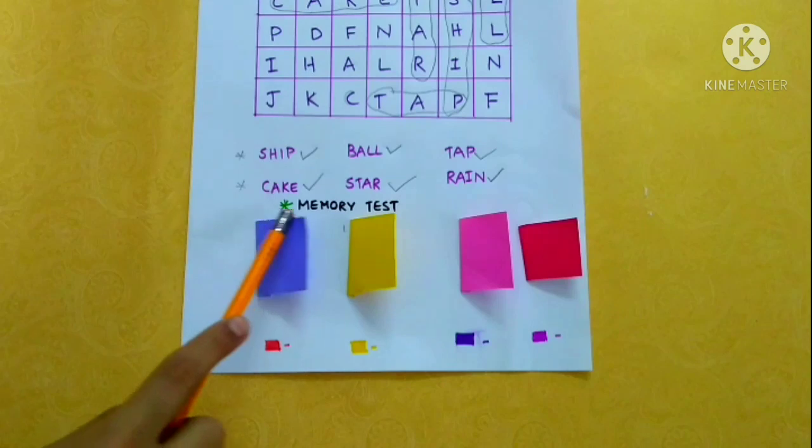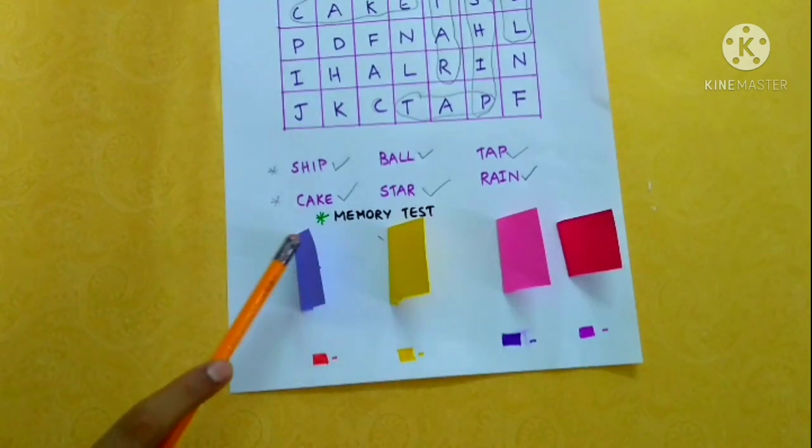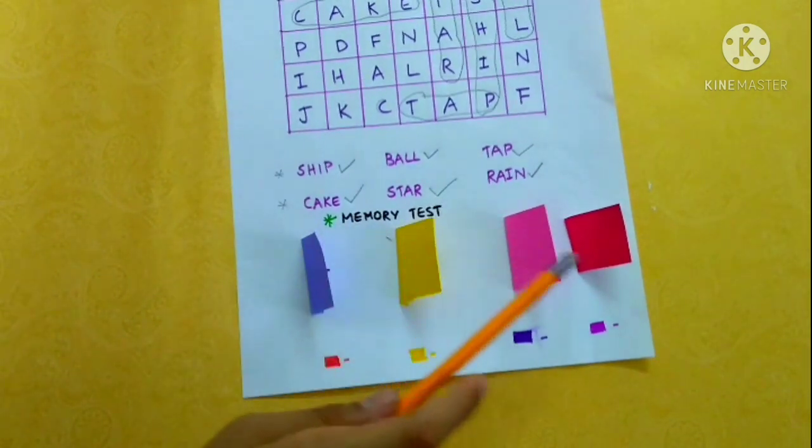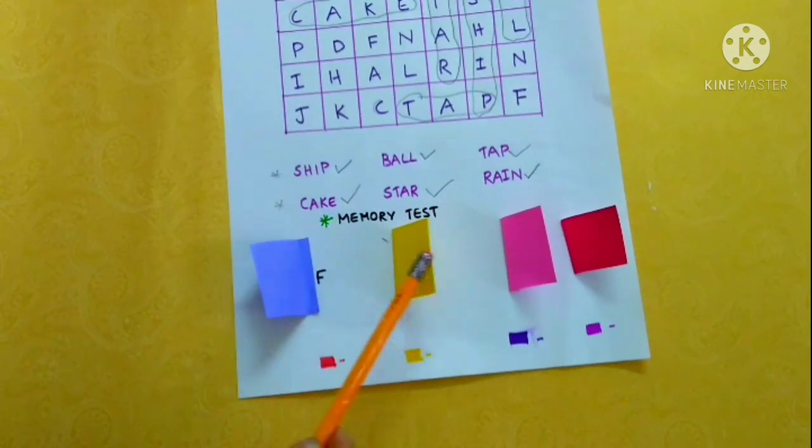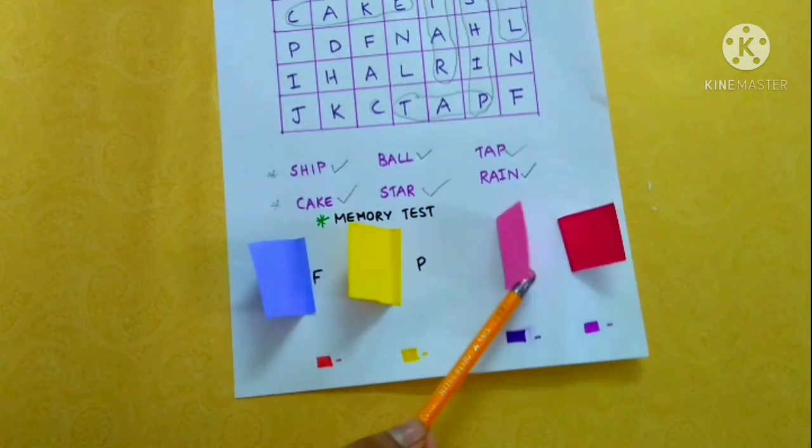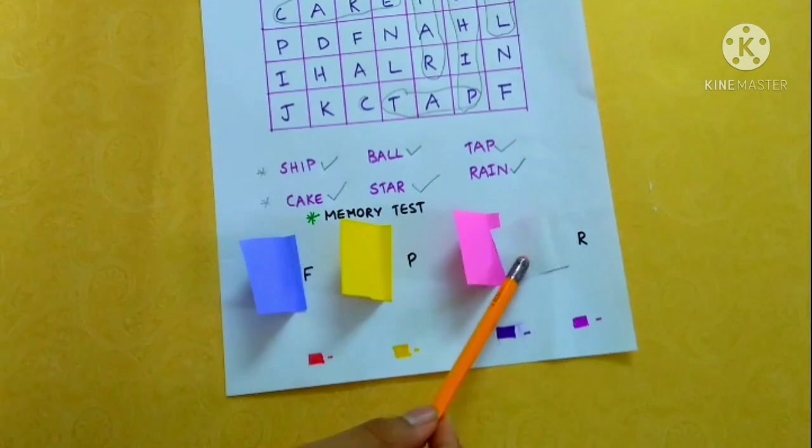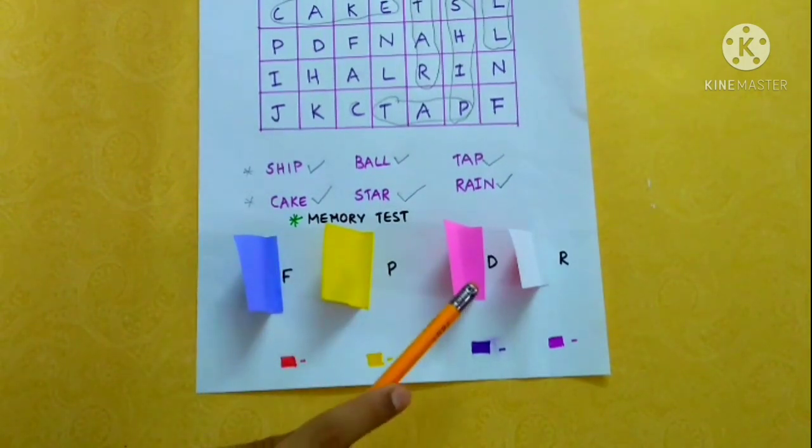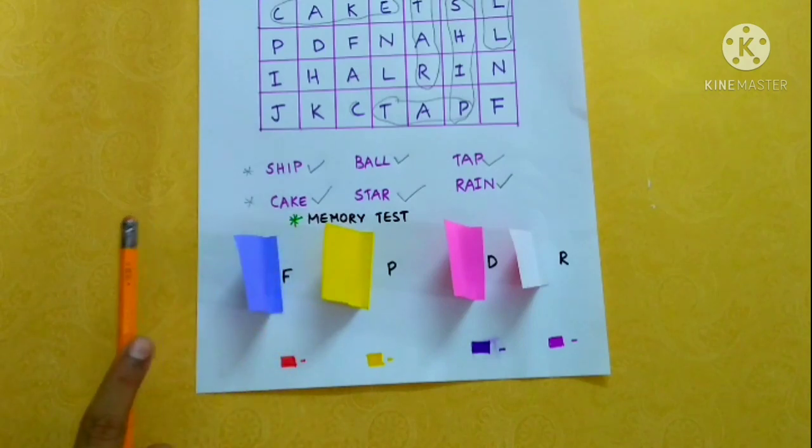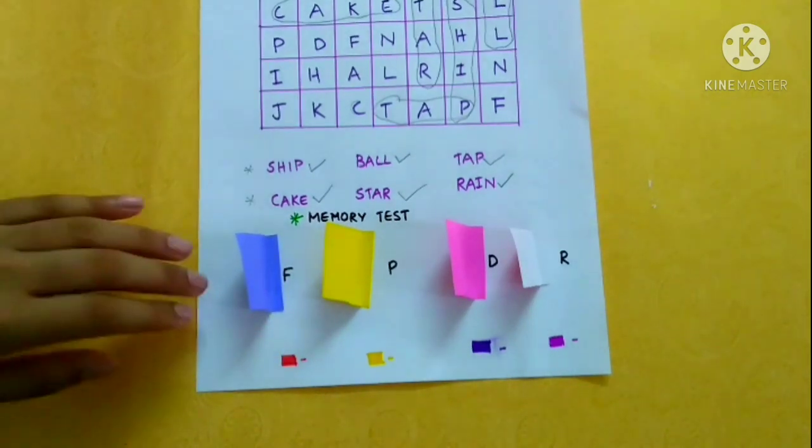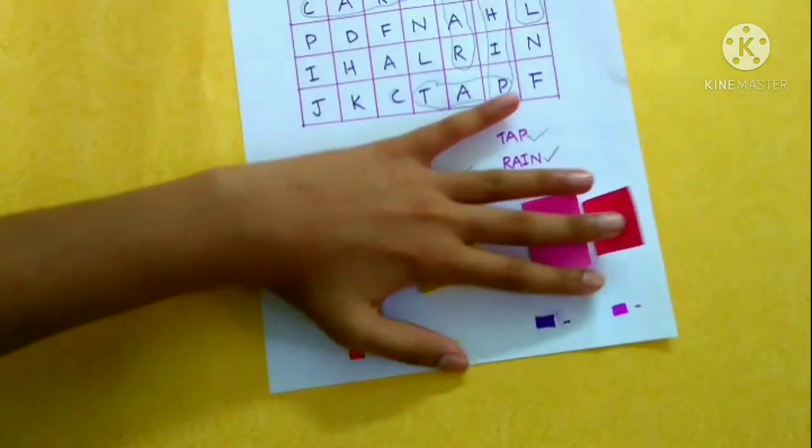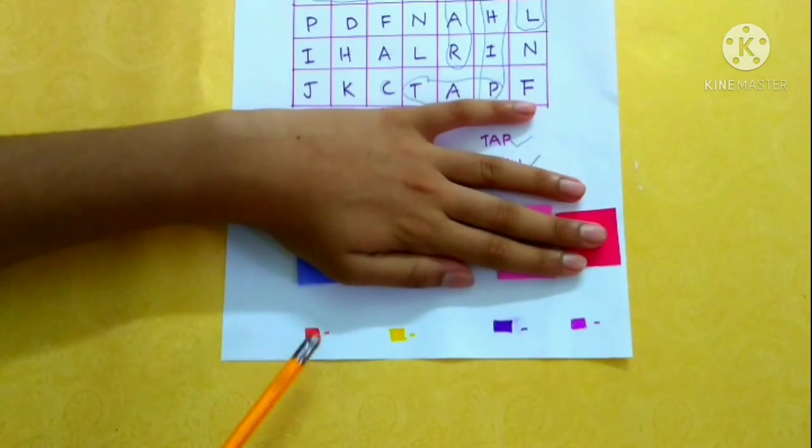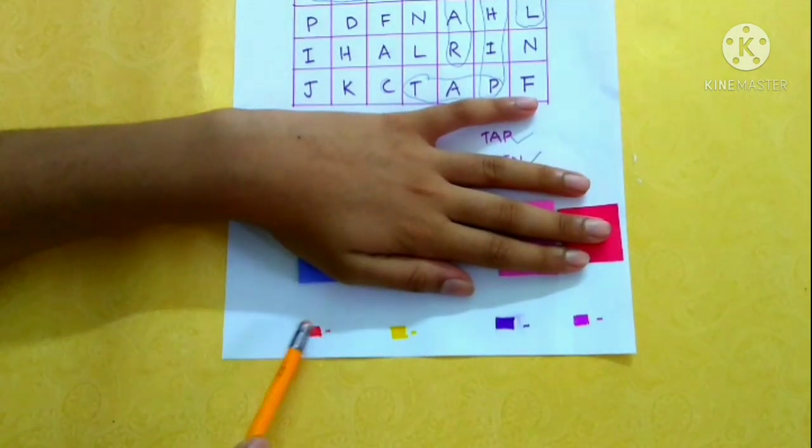Next is a memory test. There are letters written under each colored paper. Give your kids ten seconds to memorize the letter under each colored paper. After that, close it with your hands and ask your kid to write the letter under each color.